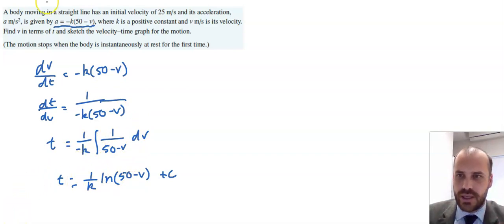Okay, where are we going to go to from here? Find v in terms of t. We need to find this c value. And how can we find the c value? Well, we have an initial velocity of 25 meters per second.